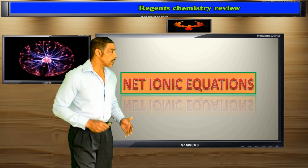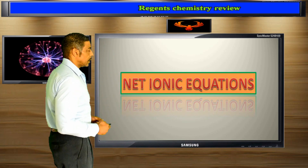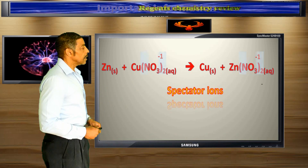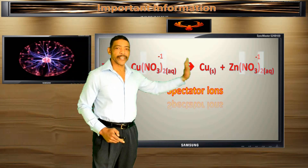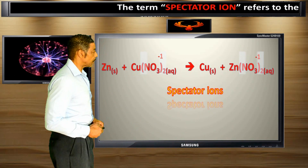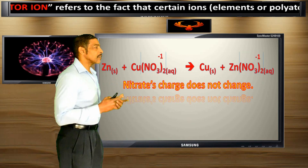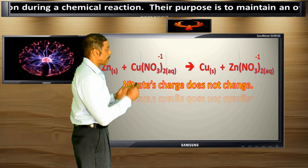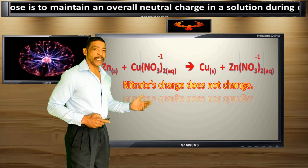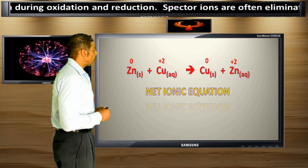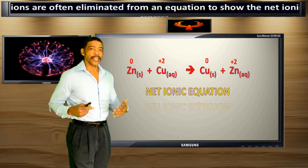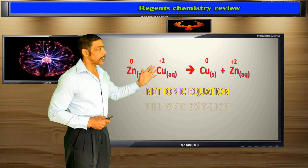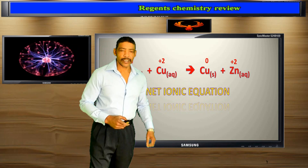The simplest form of a redox equation is called a net ionic equation. Consider the reaction between zinc metal and copper nitrate yet again. Since the nitrate ion appears on both sides of the equation, it does not actually participate in the reaction process. Ions that do not participate in the reaction process are called spectator ions. These ions exist only to maintain a balance of charge, so they may be eliminated from the equation. Eliminating spectator ions yields the net ionic equation: zinc metal plus copper 2 cation yields copper metal and zinc cation.